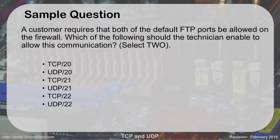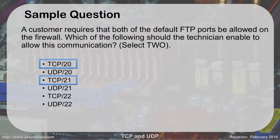Practice question: if a customer requires that both default FTP ports be allowed on the firewall, which ports should the technician enable? This comes down to memorizing your chart. FTP is port 21; it also runs on port 20 for data. This is a TCP connection because we're doing file transfers and want the three-way handshake. So the answer is port 20 over TCP and port 21 over TCP. Port 22 is SSH — a different service that won't do file transfers. You have to apply the memorization chart, and this is one of the harder questions because it also asks TCP versus UDP.